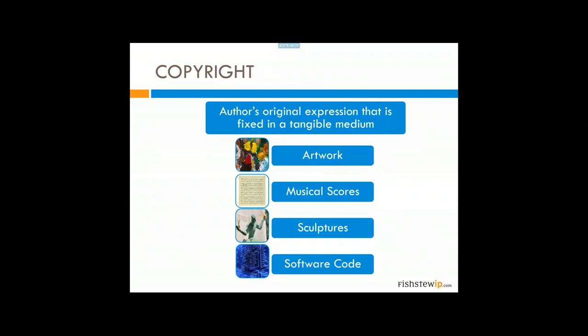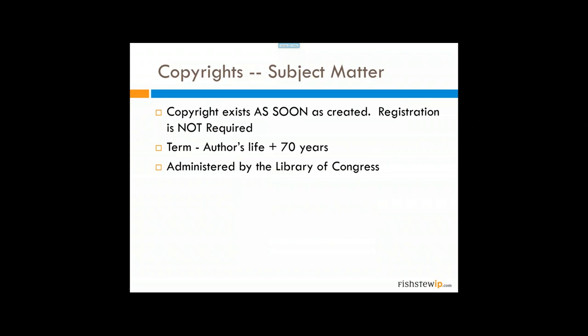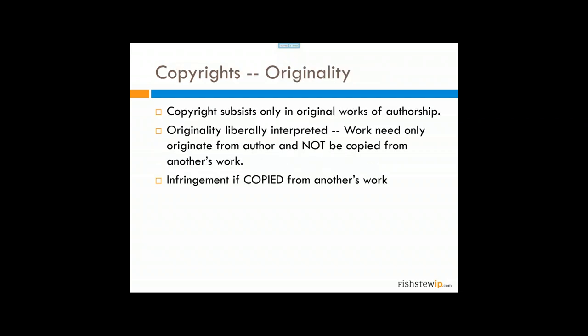Copyright protects an author's original expression that is fixed in a tangible medium — artwork, musical scores, sculptures, software code, basically anything you can put into tangible form that has originality. Copyright exists as soon as it's created; registration is not required. At minimum, if done by an individual, the term is the author's life plus 70 years. The copyright system is administered by the Library of Congress. Originality is very liberally interpreted: it only needs to originate from the author and not be copied from another's work.